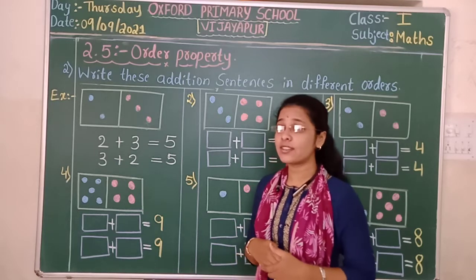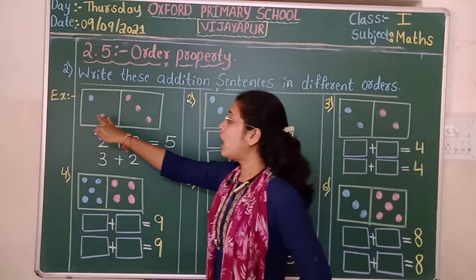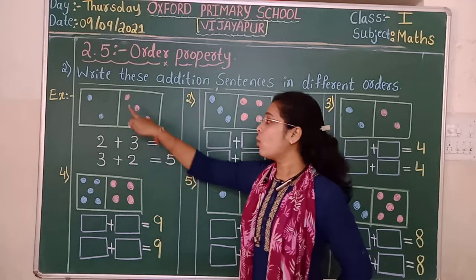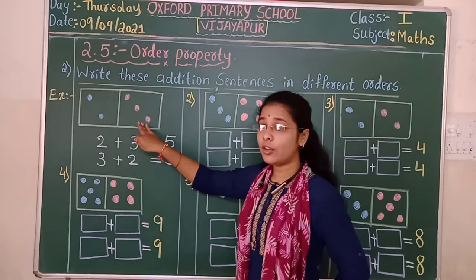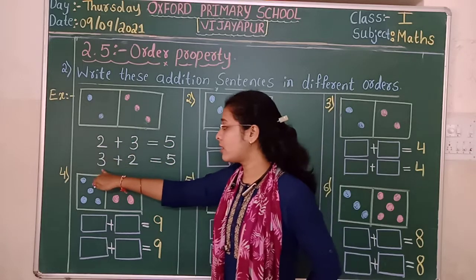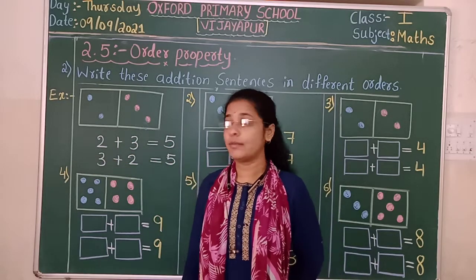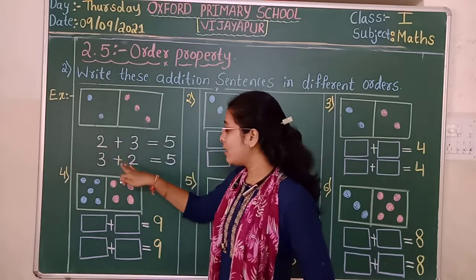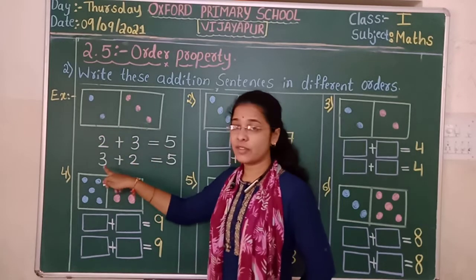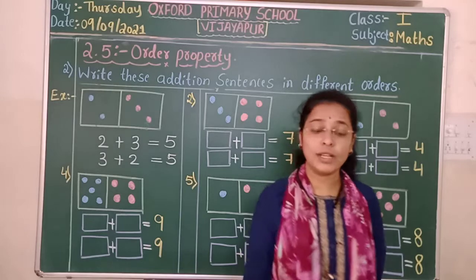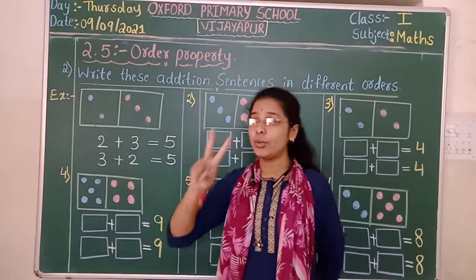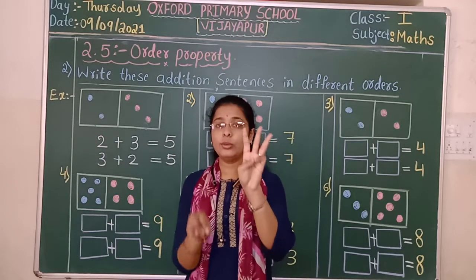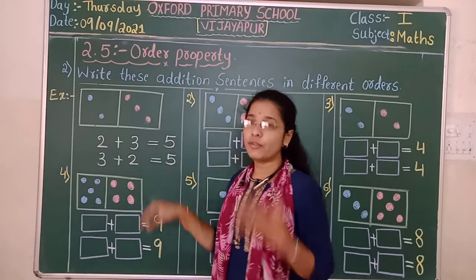Next, for the second addition sentence, we have to interchange. Our first addend becomes the second. Here we have two dots, and here we have three dots — this is our second addend which we are going to consider as the first addend. The order of the addends changes: first addend becomes second and second addend becomes first. But the sum we get is the same. Two is the first addend, three is the second addend — counting gives us five. Then three is the first addend and two is the second — counting again gives us five. The sum is the same.